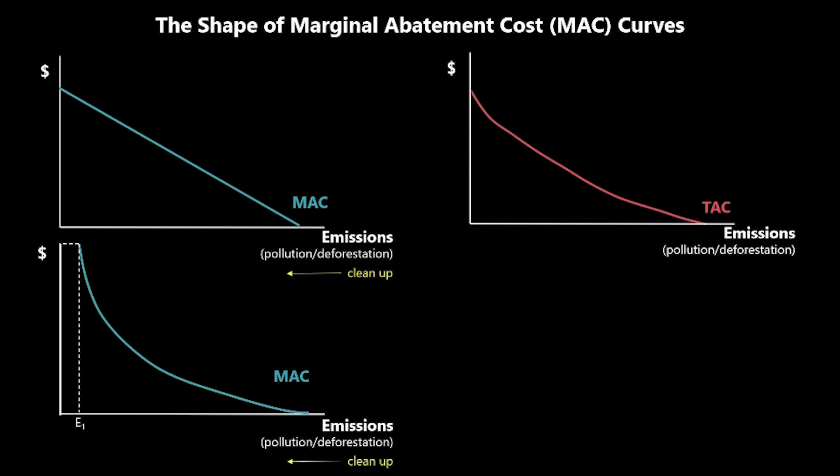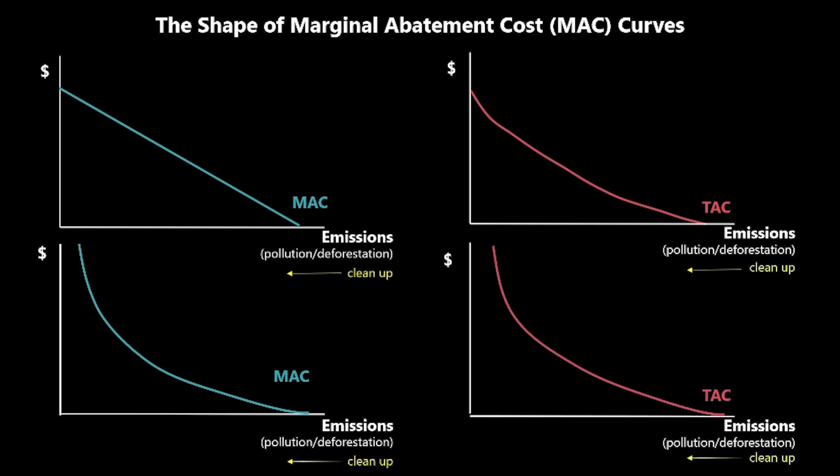So the marginal abatement cost curve in this case would be downward sloping but non-linear, approaching infinity as we get closer to reducing emissions to zero. What this means is that the total abatement cost curve will have a similar shape — also increasing at an increasing rate as we reduce emissions, although the scale would be greater.